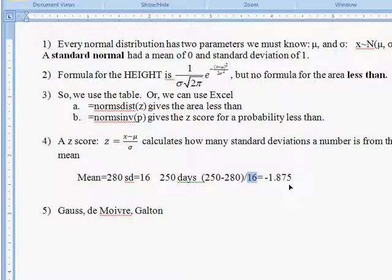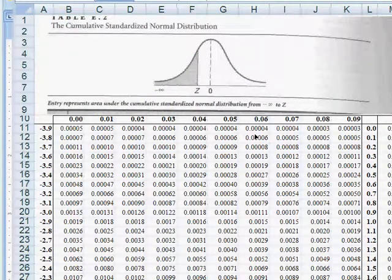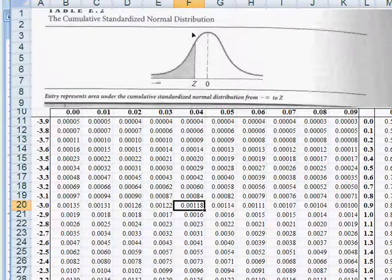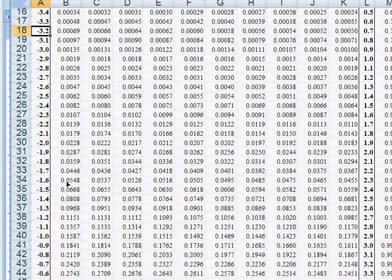Now what can we do with that negative 1.875? Well, let's go to a normal distribution table. This is a table that I created in Excel using those functions we looked at a minute ago, but there are a couple different types of tables.